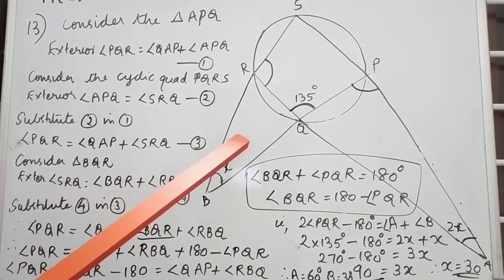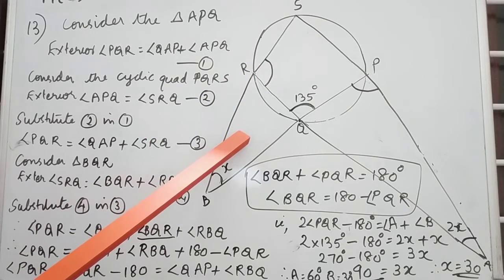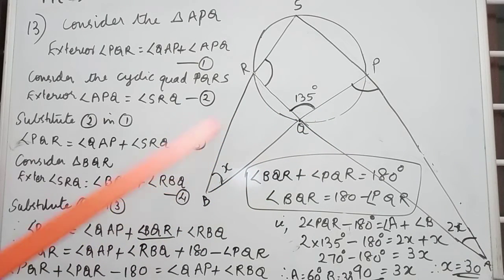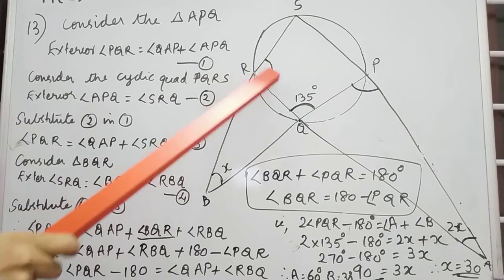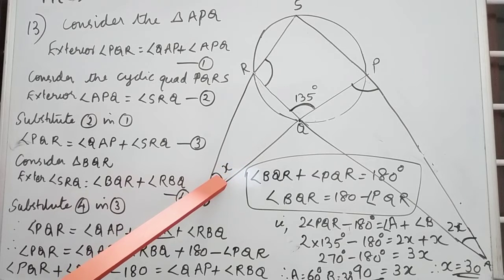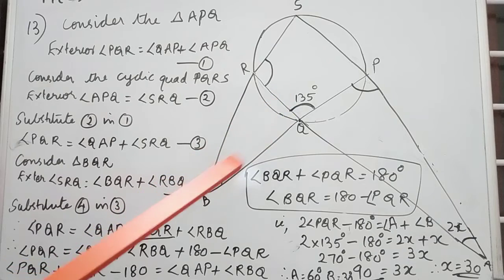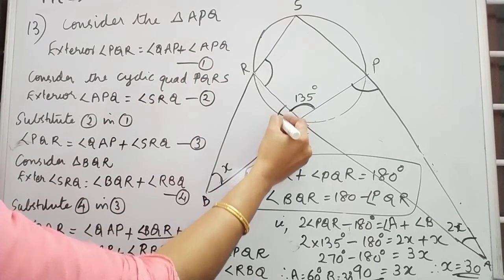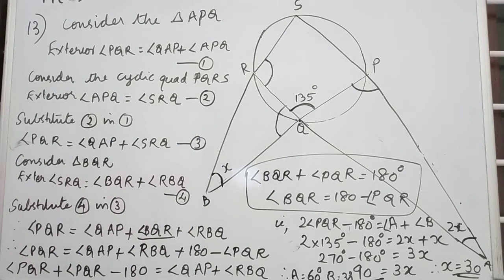Next consider triangle BQR. We can take exterior angle SRQ. The exterior angle SRQ is equal to the sum of opposite interior angles, which are angle B and angle BQR. That is SRQ equals BQR plus RBQ — the sum of these two angles. Let it be equation number 4.